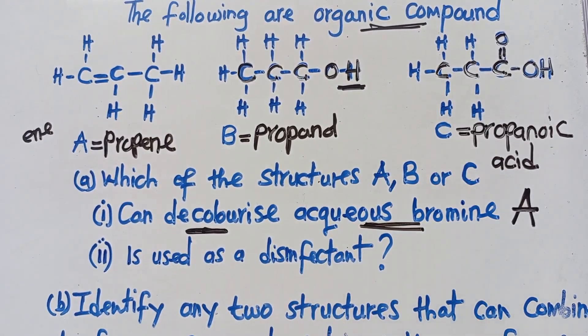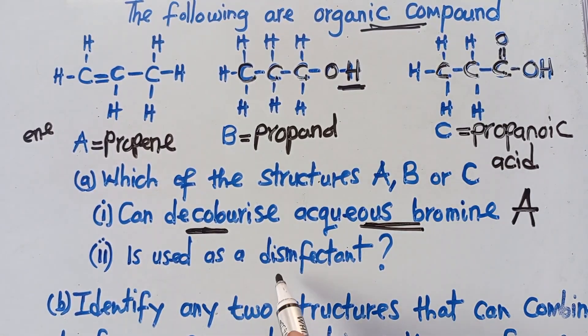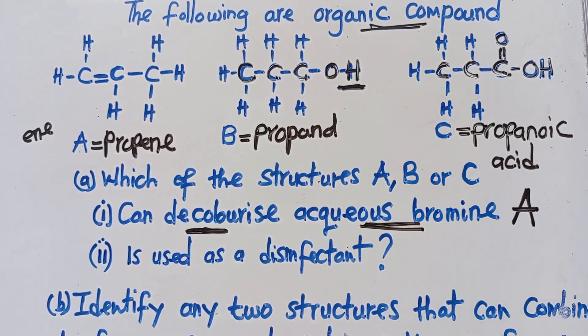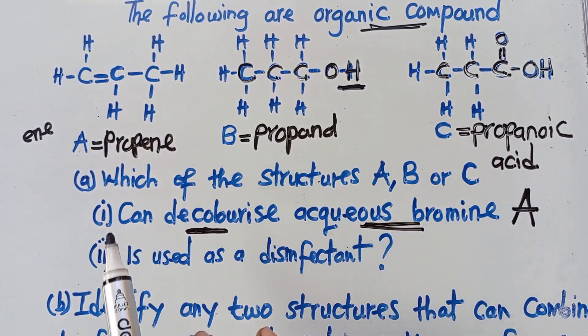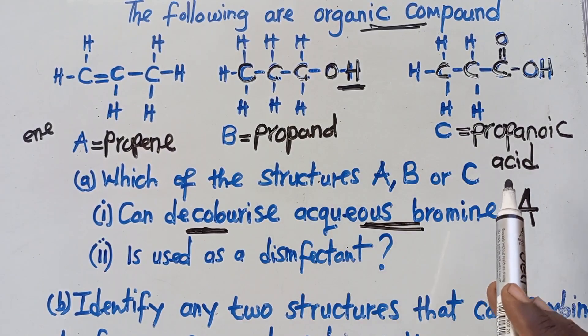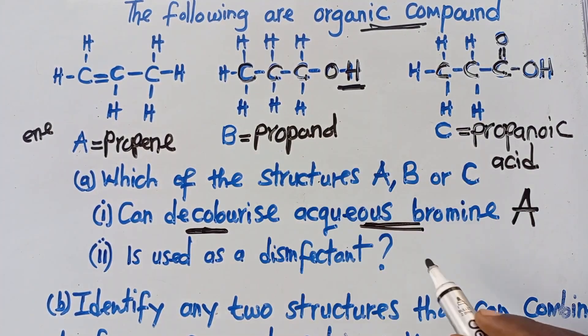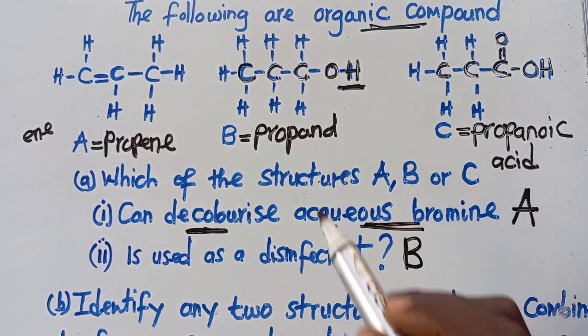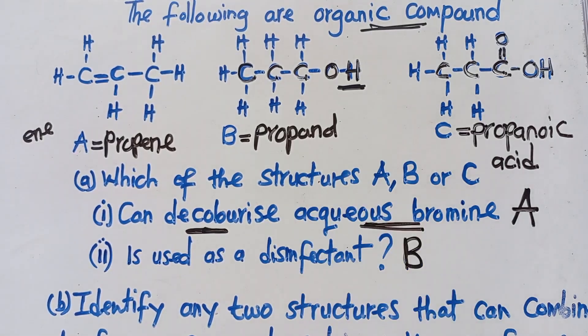We go to this particular question. It is used as a disinfectant. So disinfectant, it is only an alcohol that can be used as a disinfectant. So what is an alcohol here? Is this an alcohol? No. Is this an alcohol? No. This is an acid. So it is only B. So this is the reason why the answer there is B. As simple as that. Organic chemistry is a simple subject as long as you are able to follow it clearly like that.